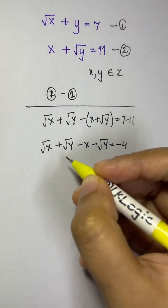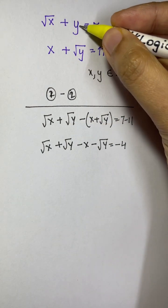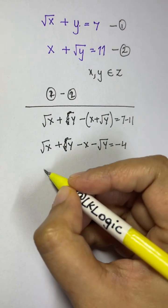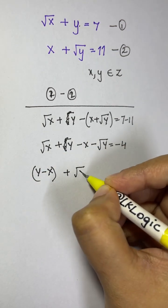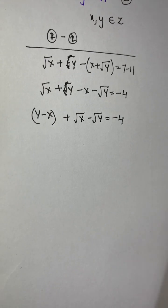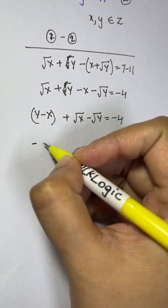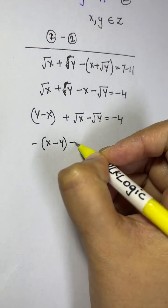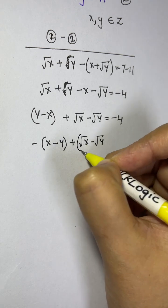Now we can pair things up. Note that the second equation has just y, not root y. So we get y minus x plus root x minus root y equals negative 4. Taking out the negative sign gives us: minus of x minus y plus root x minus root y equals negative 4.